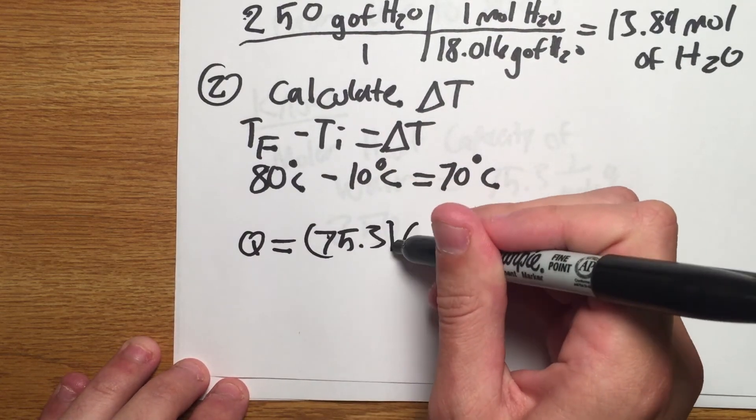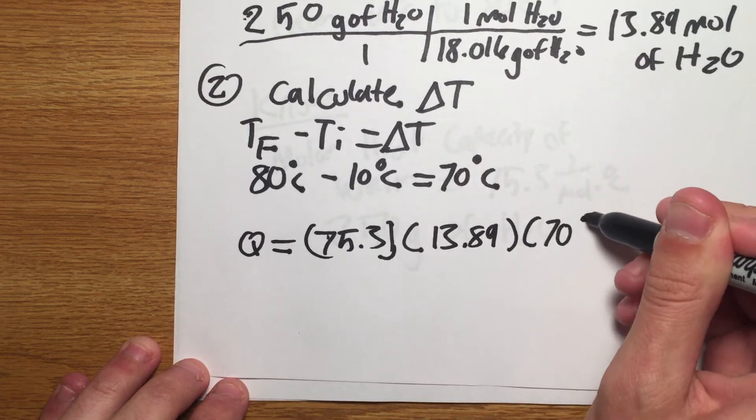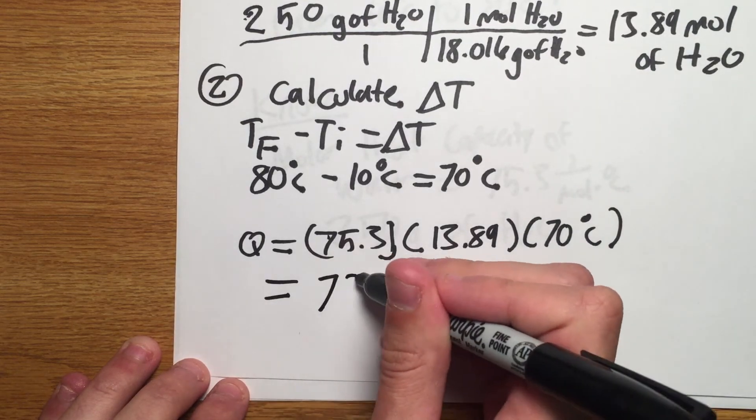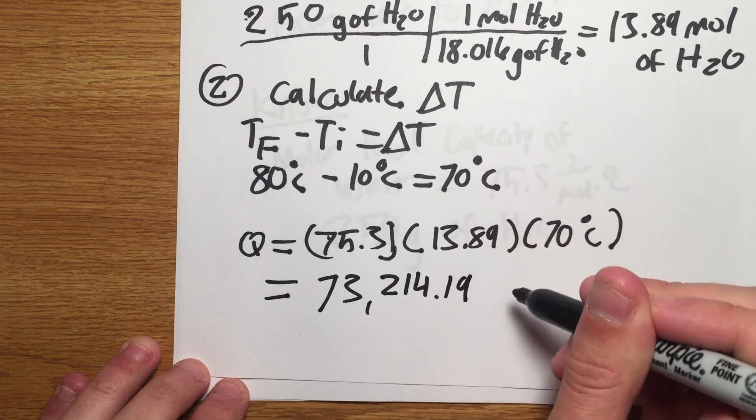Now substitute the relevant values we have obtained into the equation and solve. This gives us Q equals 73,214.19 joules.